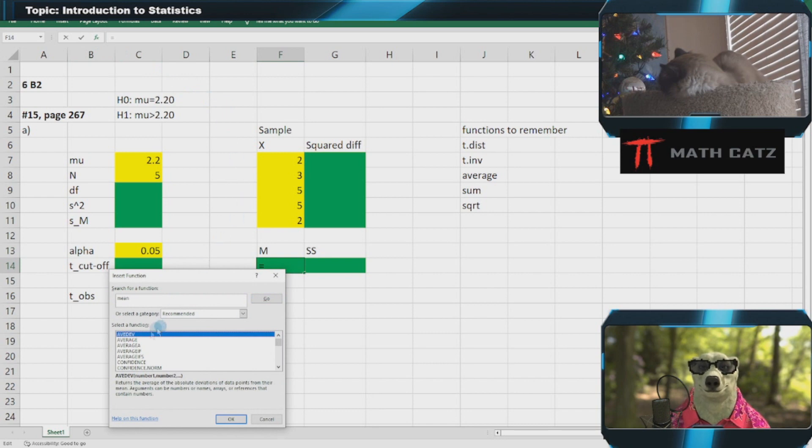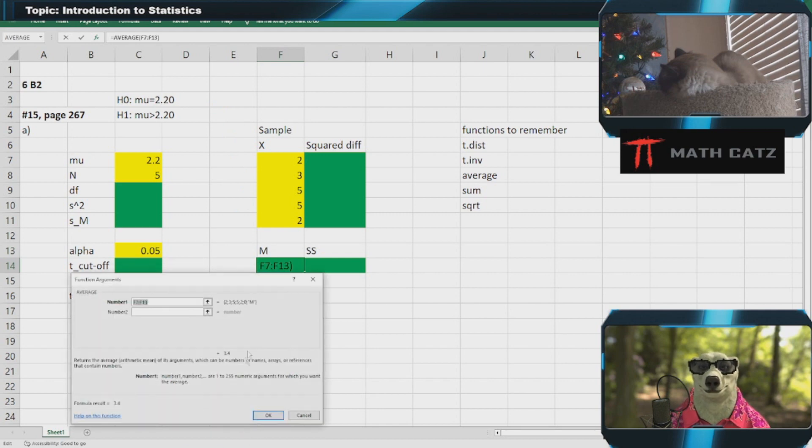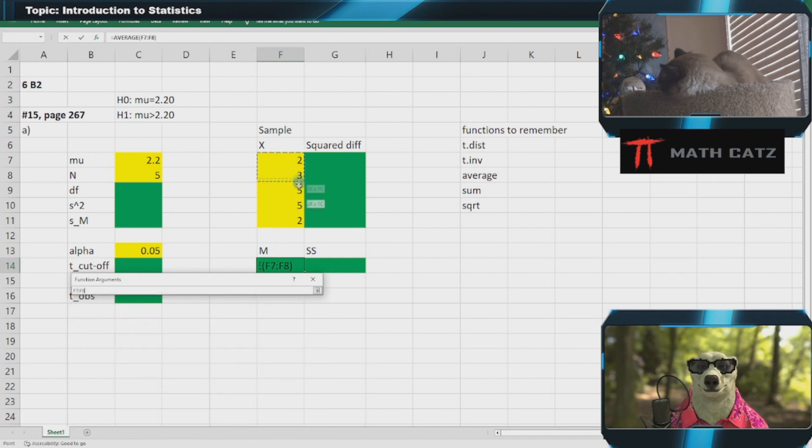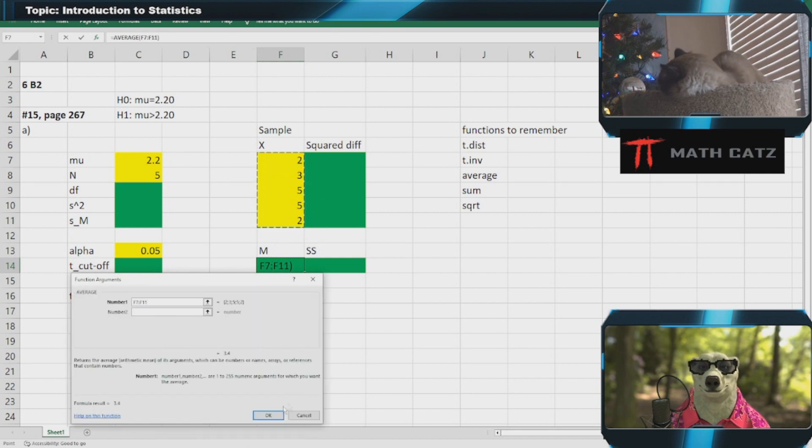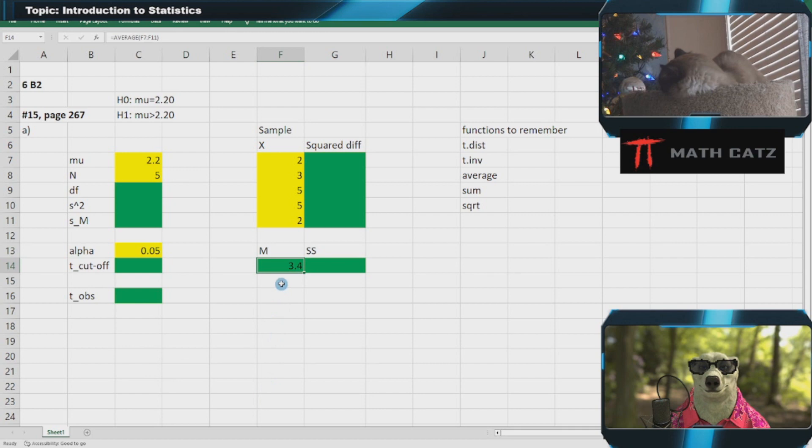You can search for mean. In Excel it's called average, which is the arithmetic mean. I highlight the range and click OK, and there's the average, which we'll call M.